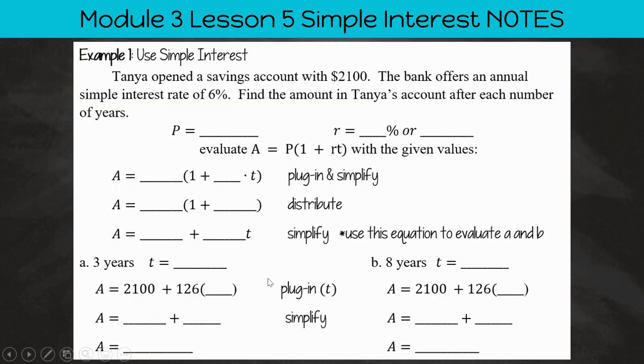So example one, we're going to use Simple Interest. So Tanya opened a savings account with $2,100. The bank offers a Simple Interest Rate of 6%. You'll notice I'm highlighting these the same color as I did on the previous page for what they represent. Then we need to find the amount in Tanya's account after each number of years.